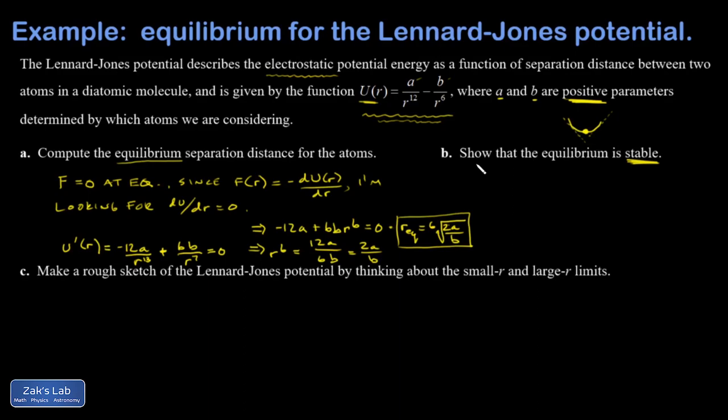And that turns out to not be too hard in this case. Curving upward means the second derivative that's positive. So let's get U double prime of R. So I have negative 12A R to the negative 13. So I've got to bring down a negative 13. And that gives me positive 156A over R to the 14. And then my second term, I have 6B R to the negative 7. Bring down the negative 7 and I end up with negative 42B. Subtract 1 from the exponent on R, which gives me a negative 8. So it's over R to the 8th.